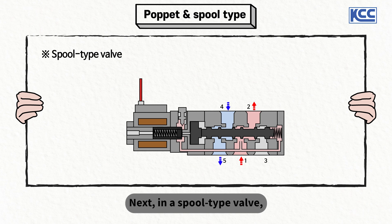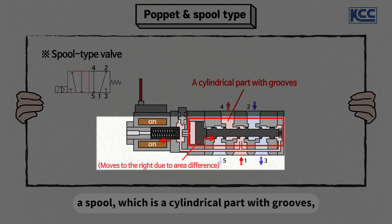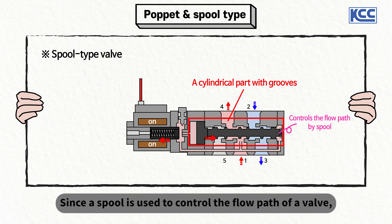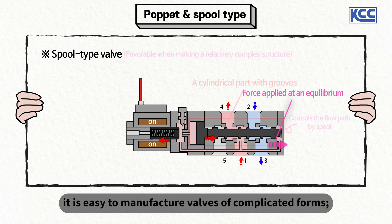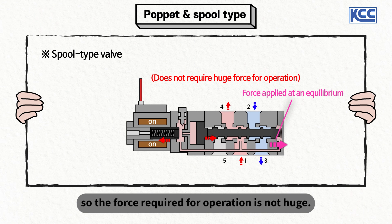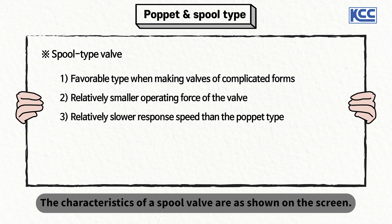The characteristics of a poppet type valve are as shown on the screen. Next, in a spool type valve, a spool — which is a cylinder part with grooves — moves along the axis of a valve to operate it. Since a spool is used to control the flow path of a valve, it is easy to manufacture valves of complicated forms and the force applied to a spool is in a state of equilibrium, so the force required for operation is not huge. The characteristics of a spool valve are as shown on the screen.